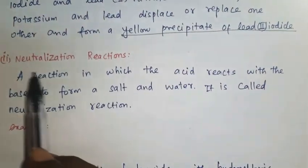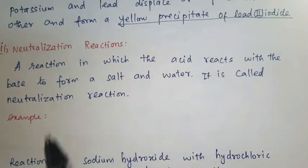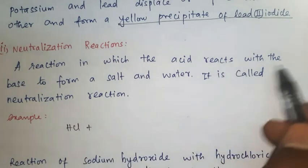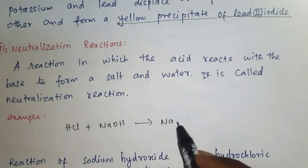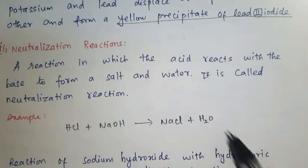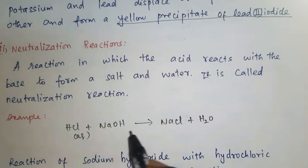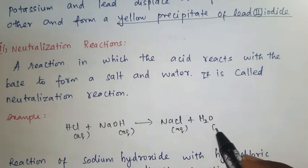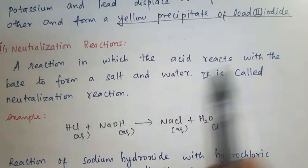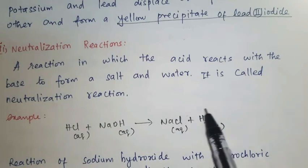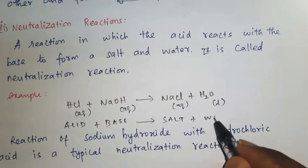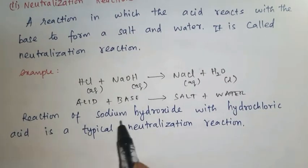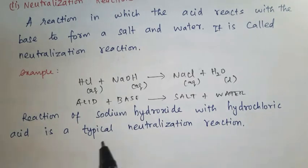Second type — neutralization reactions: a reaction in which an acid, for example HCl (hydrochloric acid), reacts with a base, for example sodium hydroxide (NaOH), to form a salt and water. Salt is NaCl (sodium chloride) and water is H₂O. HCl is in aqueous state, NaOH also in aqueous state, NaCl also in aqueous state, and H₂O in liquid state. In general form: Acid + Base → Salt + Water. The reaction of sodium hydroxide with hydrochloric acid is a typical neutralization reaction.